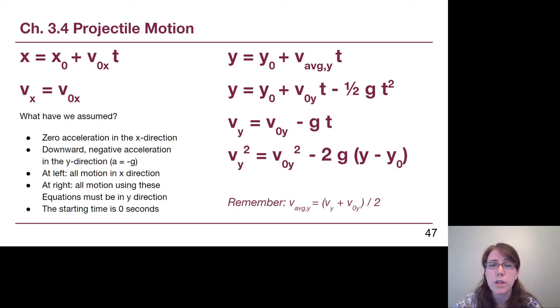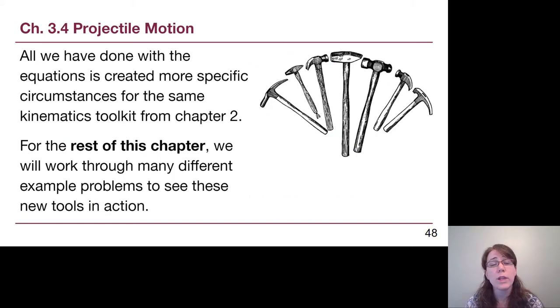As a reminder, some of the assumptions that we've made are that there is no acceleration in the horizontal direction, that gravity is downwards and we've forced that to become negative, and that you can only use the x equations for horizontal motion and you can only use the y equations for vertical motion. And just like in Chapter 2, we've set our initial starting time to be zero seconds so that we're watching a situation having just started a stopwatch as soon as we start looking at it.